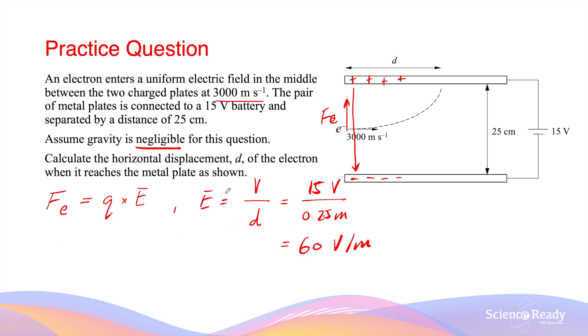Now that we've found the strength of the electric field, we can work out the force acting on the electron by taking the charge of the electron, 1.602 times 10 to the power of minus 19 coulombs, times 60 volts per meter. This gives me minus 9.6 times 10 to the power of minus 18 newtons. The negative sign here indicates that the force is going upwards against the direction of the electric field, which is going downwards.